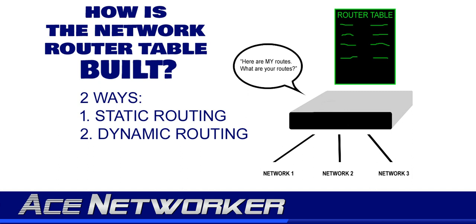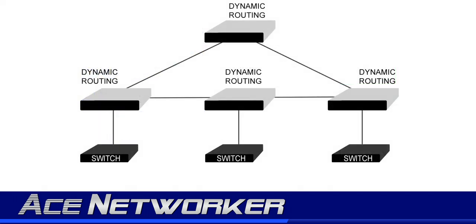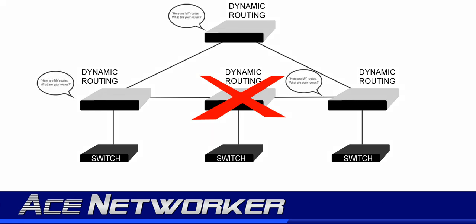So we dealt with static routing, where you program in the routes. Dynamic routing is where routers are programmed to talk to each other and tell each other their known routes, and update each other with any changes detected on a network so they can all adjust their routing tables accordingly. Dynamic routing also allows routers to provide multiple paths to different networks if something goes down. Let's say all four of these routers are now using dynamic routing, and something happens to the second router — just like the previous scenario. If they're using dynamic routing protocols, the routers that are still running and connected will update each other to let them know the second router isn't there anymore, and each of those routers will adjust their routing tables to keep network traffic moving the best way possible.